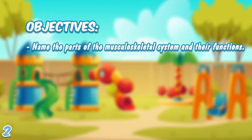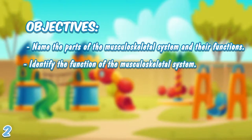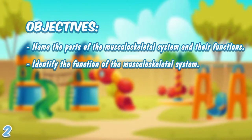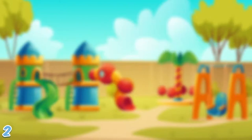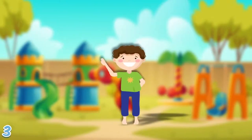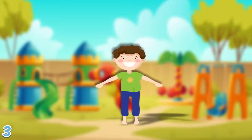Objectives: name the parts of the musculoskeletal system and their functions, identify the function of the musculoskeletal system, and explain how the organs of the musculoskeletal system work together with other organ systems.